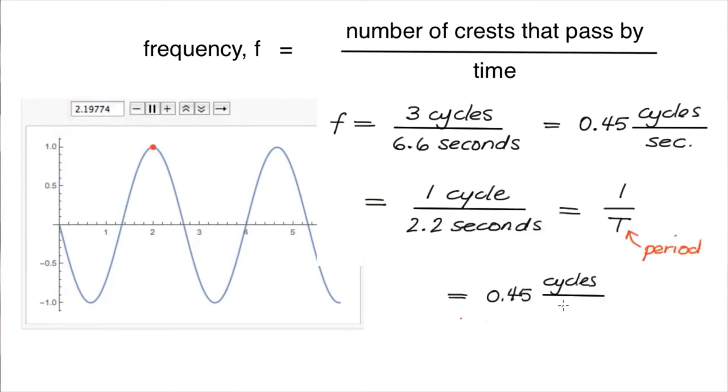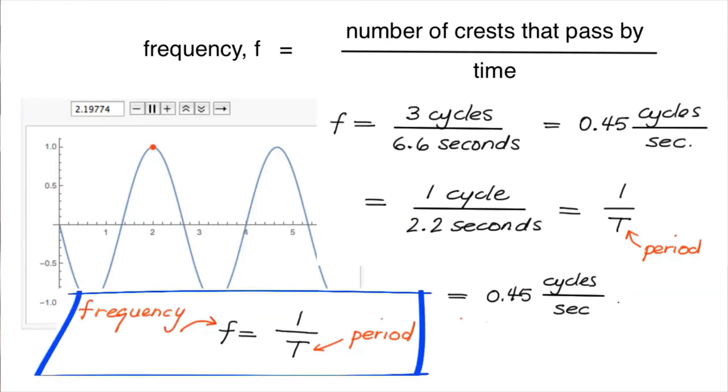Frequency is often denoted with a small f, and the mathematical relationship between frequency and period is this. Again, the frequency of the wave is 1 on the period of the wave.